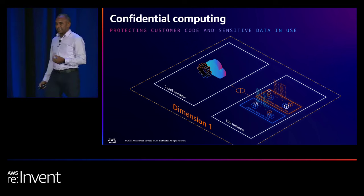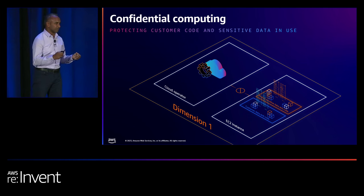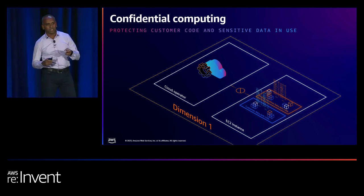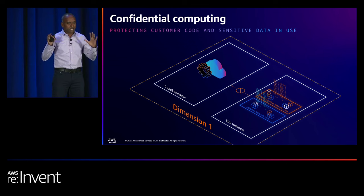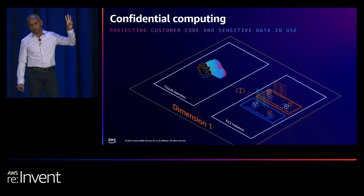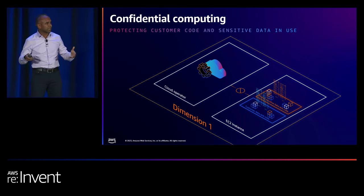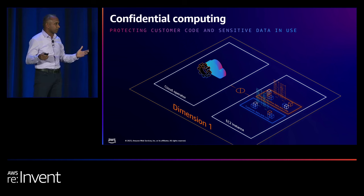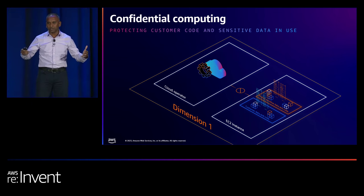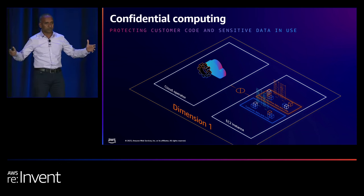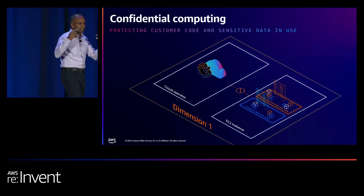At AWS, we define confidential computing as the use of specialized hardware and associated firmware to protect data in use from any unauthorized access. The key focus is protecting data in use. If you take a step back and think about what you do with data, we do three main things: we store it, we move it, we process it. The mechanisms to protect data at rest and in transit have existed for a while. Confidential computing extends this protection to data when it's in use, providing end-to-end protection.